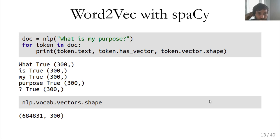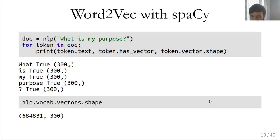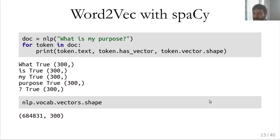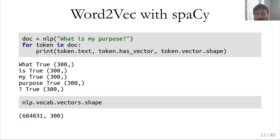Now let's actually use the word vectors. You can check whether a word vector exists for a token using the 'has_vector' attribute — for each token in the sentence it's true. The vector is a 300-dimensional NumPy array, a continuous representation. Looking at the whole vocabulary, we can see there are 684,831 word vectors included in the spaCy model.